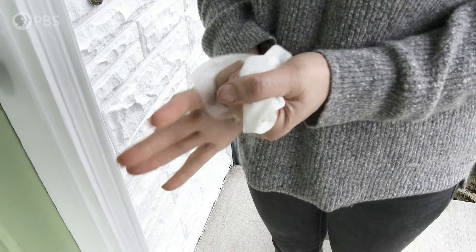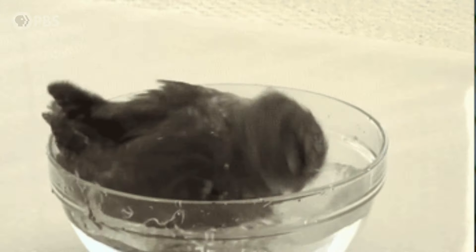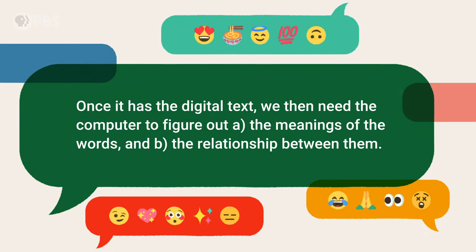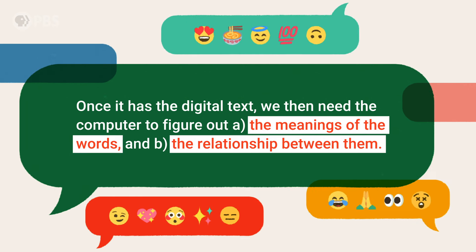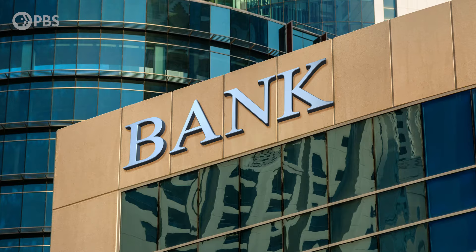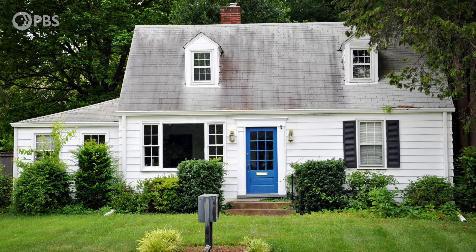This step involves figuring out where the break between words and sentences go, such as the difference between a moist towelette versus a moist owlette, or whether a small speck is the dot of an i, a period, or a fleck of dirt. Once it has the digital text, we then need the computer to figure out the meanings of the words, and the relationship between them. It might use context to disambiguate between things like bank — a riverbank and a financial bank — or common nouns and proper nouns.